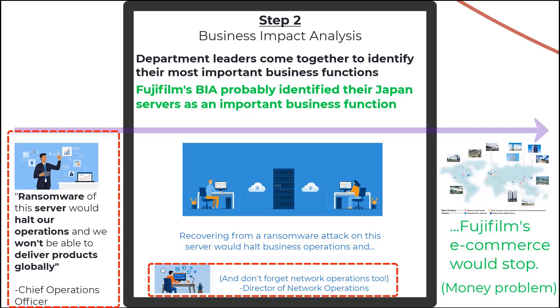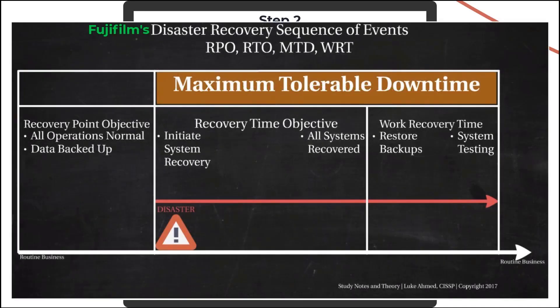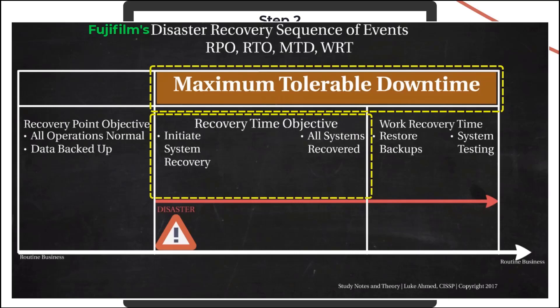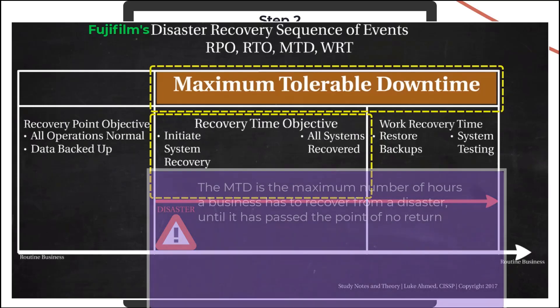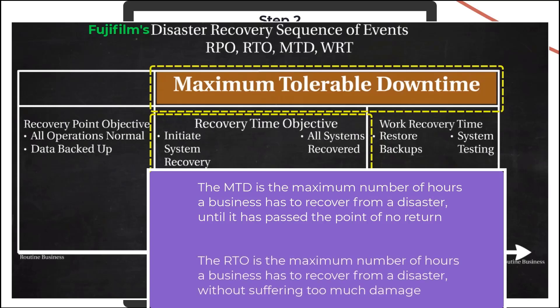For the Business Impact Analysis, let's also consider the values and measurements Fujifilm would apply to key terms. The Maximum Tolerable Downtime (MTD) is how long the business can go without being functional to the point that things cannot be fixed anymore. The Recovery Time Objective (RTO) is the amount of time a business can be down and, if brought back up before this acceptable downtime is over, the business can still return to normal operations without much damage.